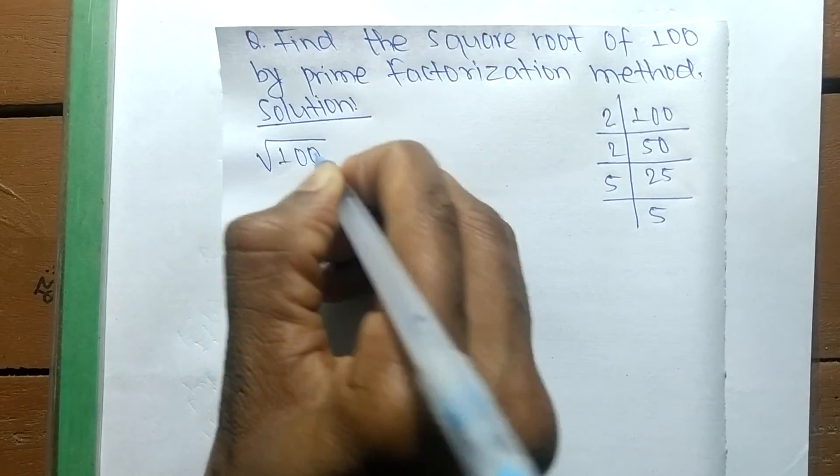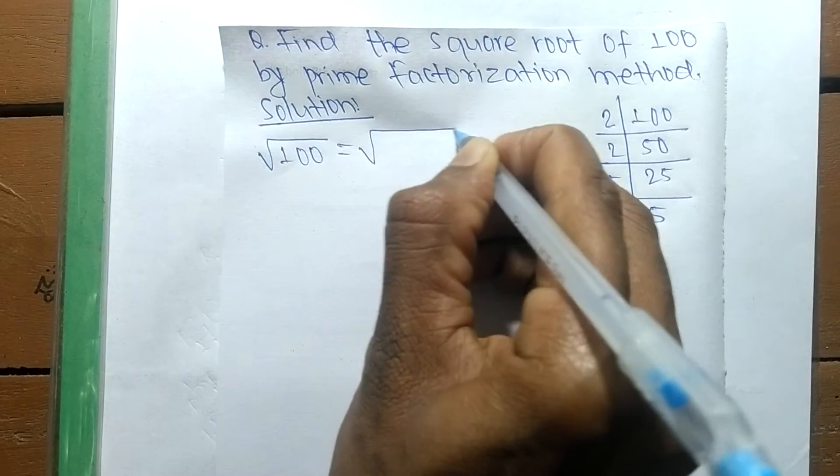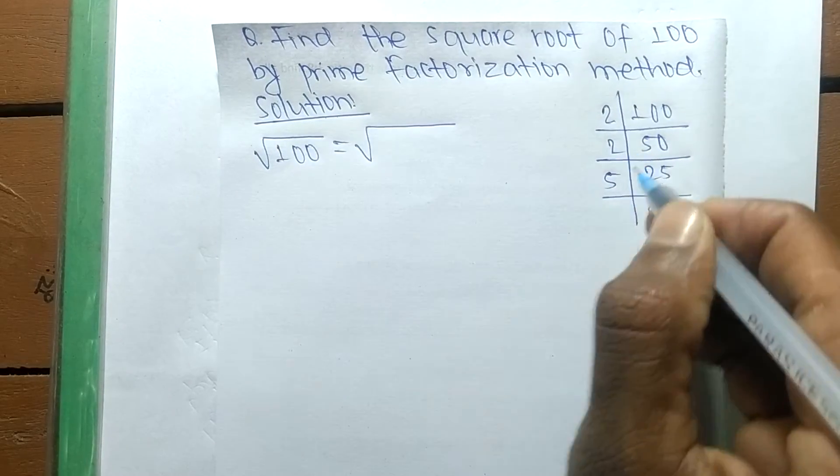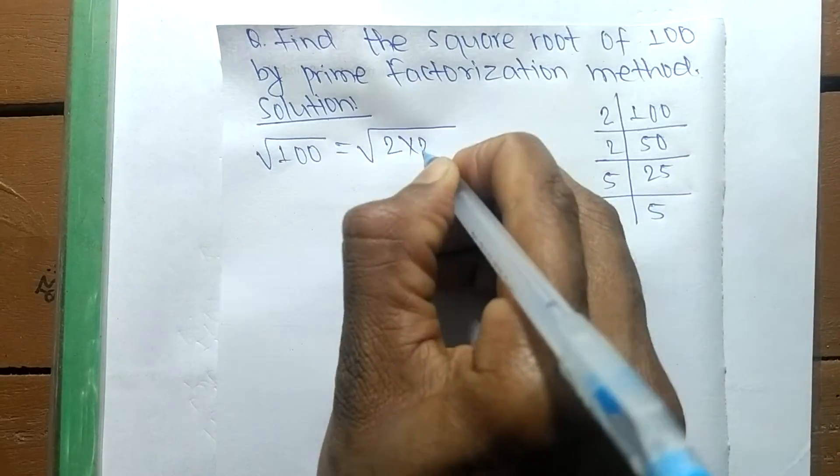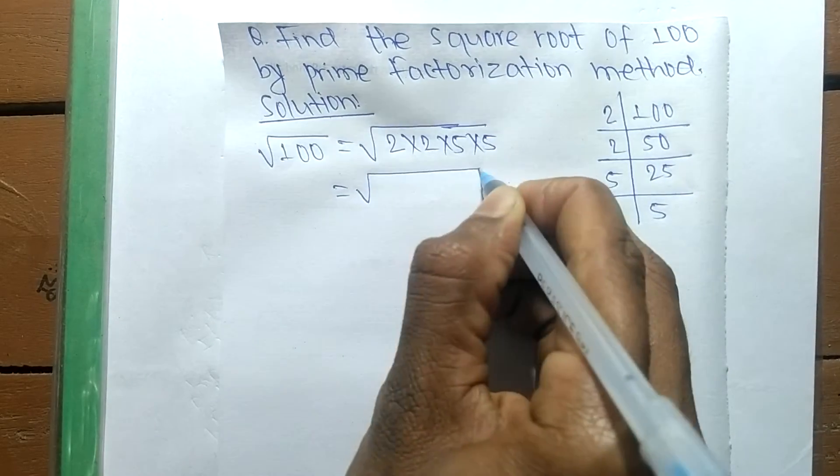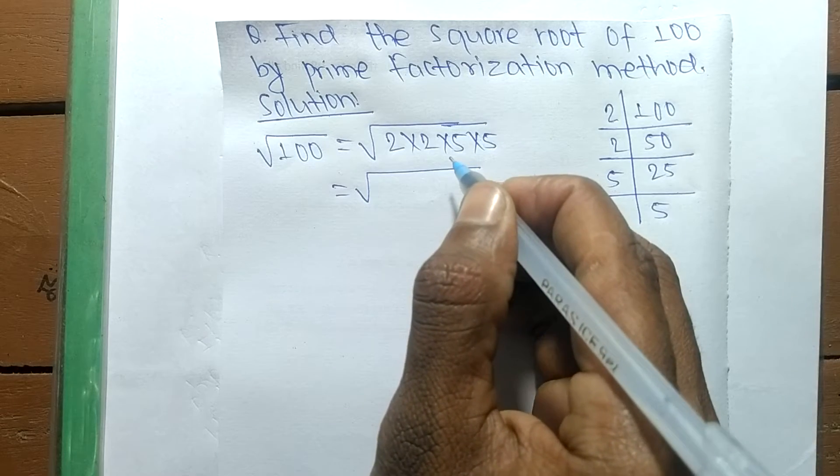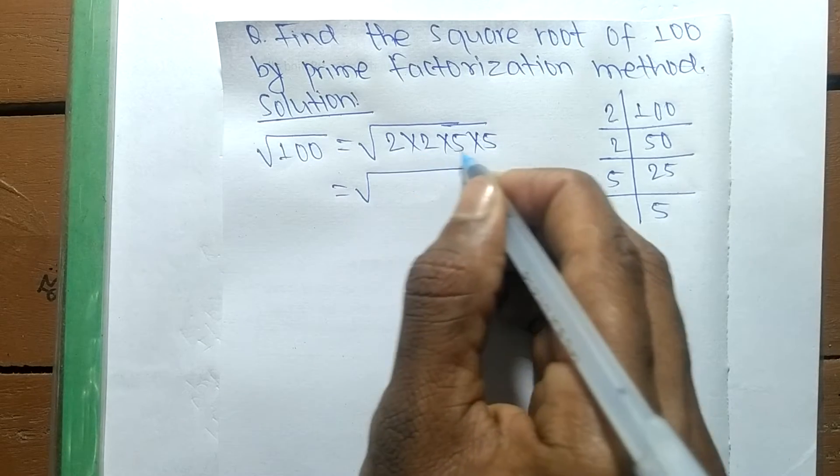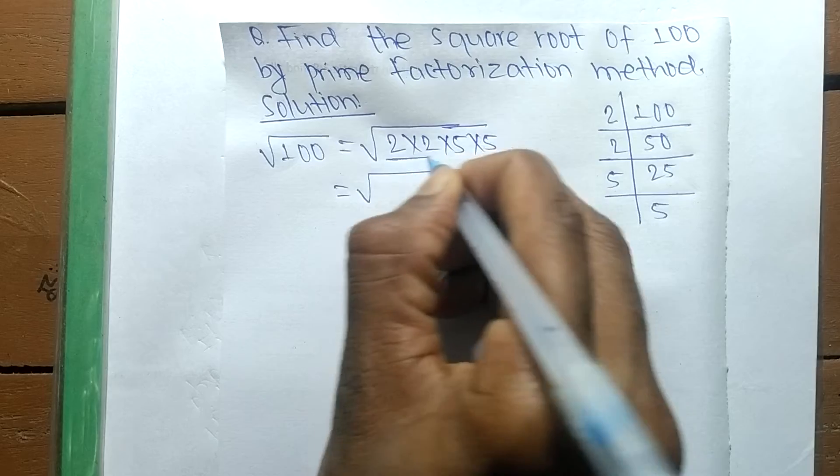It is equal to, from these prime factors we can write 2 into 2 into 5 into 5. From these prime factors now we make the square of these prime factors, so 2 into 2 is 2 square.